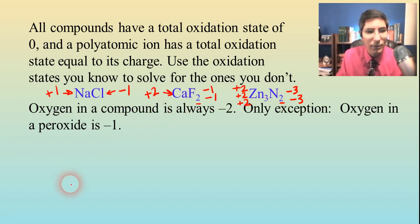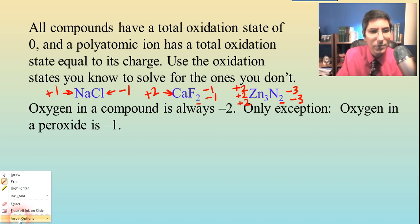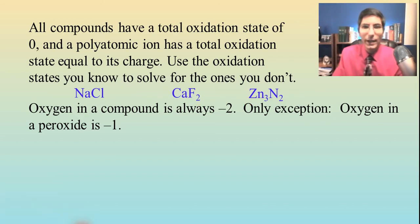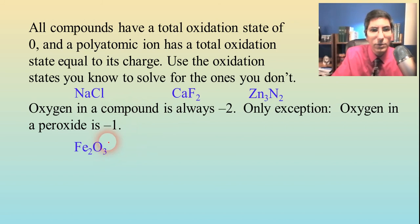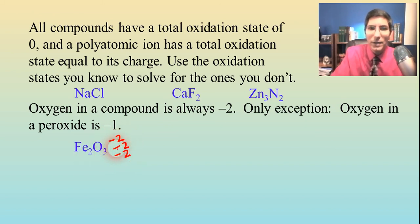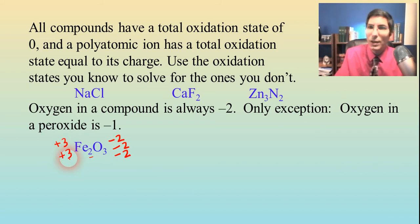Now, oxygen in a compound is always going to be negative two. There's one exception: if you ever have a peroxide, oxygen in a peroxide is going to be negative one. As an example, we have Fe₂O₃ — oxygen is negative two, and we have three of them, so that's a total of negative six. The irons therefore have to be positive six total, and we have two of them, so that divides out to positive three for each.